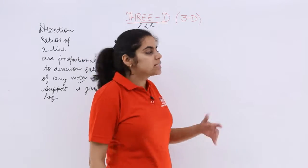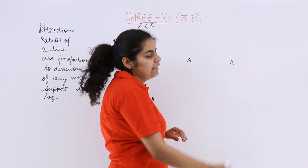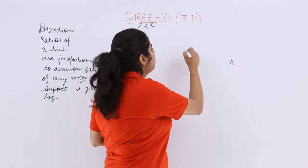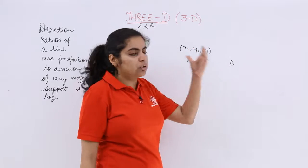Let me tell you here what I am saying. Suppose there is any line and there are two points on that line, A and B. Point A has the coordinates x1, y1, z1 because now we are talking about 3D.